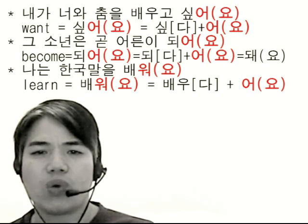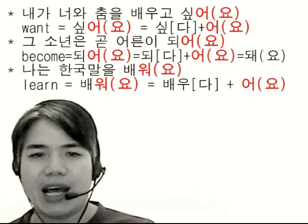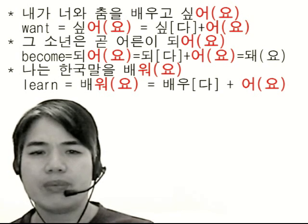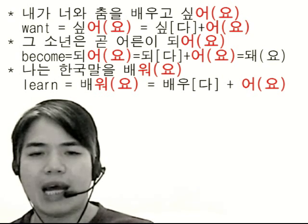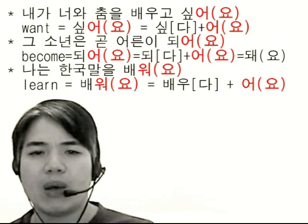돼요 instead of 되어요. The last one: 나는 한국말을 배워요. 배워요 means 'learn.' The verb root of 'learn' is 배우다, so we drop 다 again and add 어요 — 배우어요, which becomes 배워요.